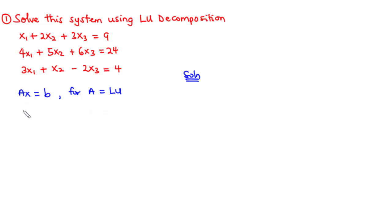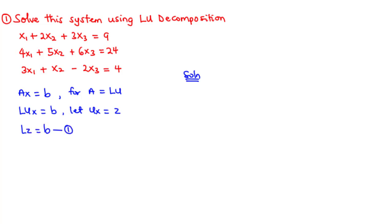Considering this first equation, we have LU times X equals B. From this, we can let UX be equal to Z, so that if we substitute Z in place of UX, we have L times Z equals B — we call this equation 1. The second equation is UX equals Z. So firstly, we solve equation 1 for Z, substitute Z into equation 2, and then solve for X. This is the procedure we use to solve this system of linear equations using LU decomposition.